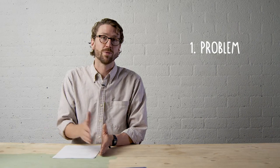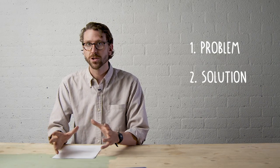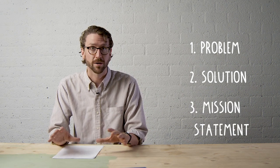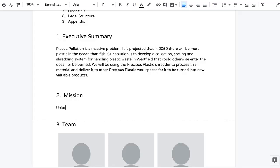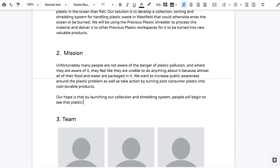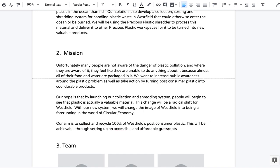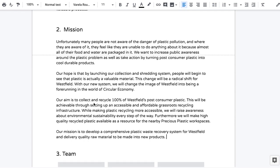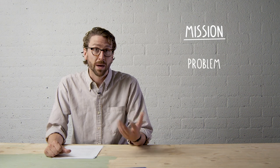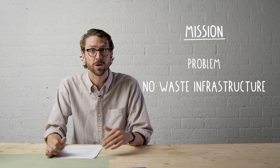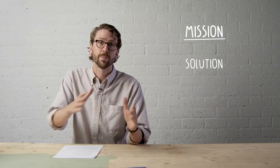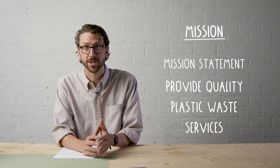The next section is the mission section, where you want to do three main things: talk about the problem in depth, describe your solution, and include your mission statement to tie it all together. Spend the most time outlining why plastic waste is an issue globally and locally, and what your unique solution is. For example, the problem could be that there is no plastic waste recycling infrastructure in your city. Your solution could be setting up a collection and sorting system along with a Precious Plastic shredder to handle this material and keep it out of the built environment. Your mission could then be to clean up your local environment and provide quality waste management services for your town.